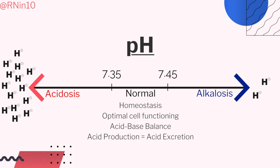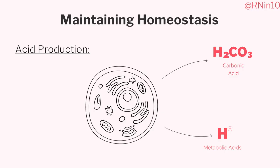Our bodies have three main processes that occur every day to keep our pH in that very narrow but normal range of 7.35 to 7.45. First, we produce acids. Acid production is a result of our cellular metabolism and we produce two types of acids: carbonic acid, which we excrete through our lungs as carbon dioxide and water, and metabolic acids, which we excrete through our kidneys in urine.